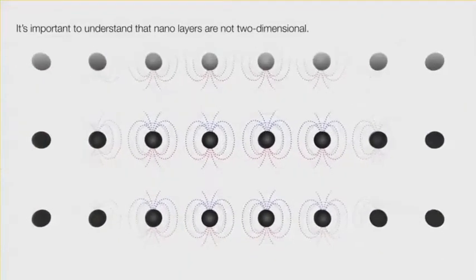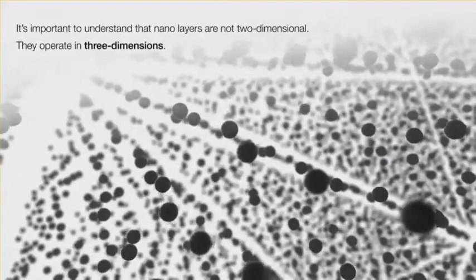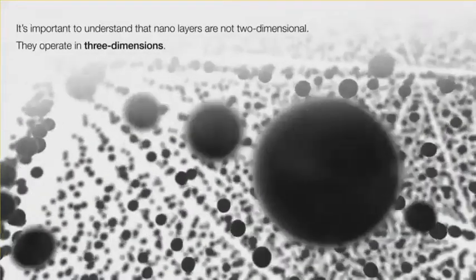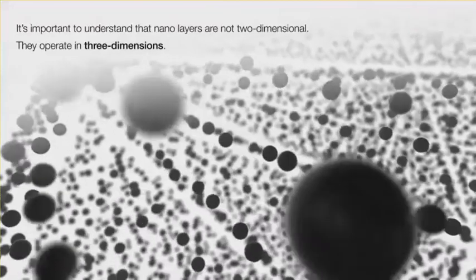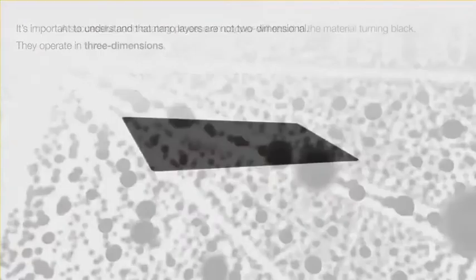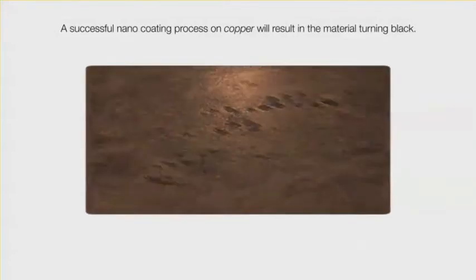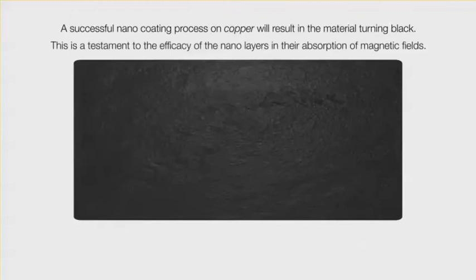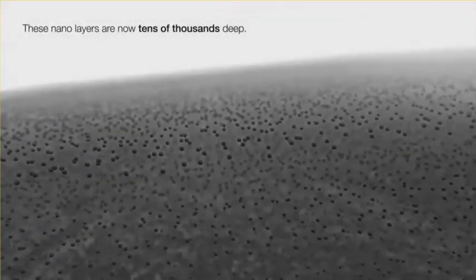It is important to understand that nano-layers are not two-dimensional — they operate in three dimensions. The successful nano-coating process on copper will result in the material turning black. This is testament to the efficacy of the nano-layers in their absorption of magnetic fields. These nano-layers are now tens of thousands deep.